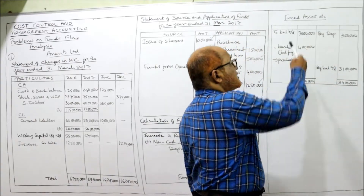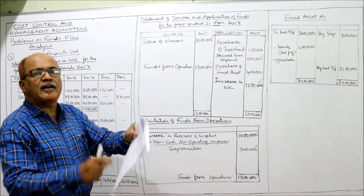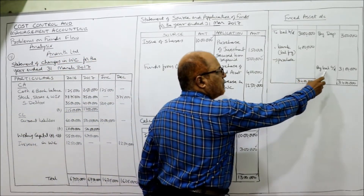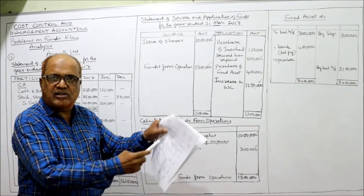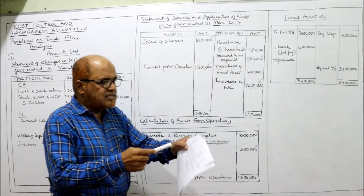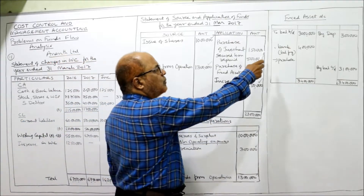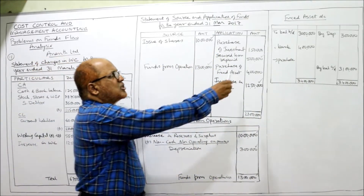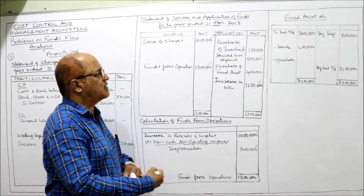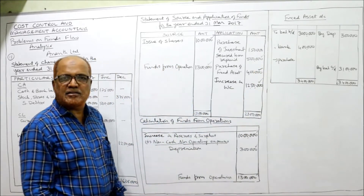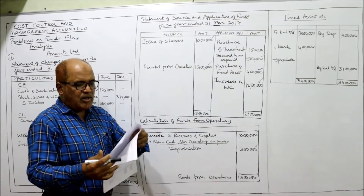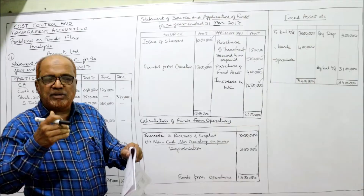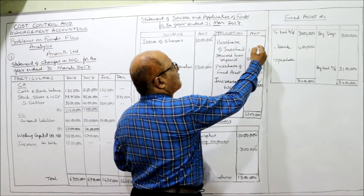We open the fixed asset account. Last year fixed assets were 30 lakh, current year 31 lakh — so balance brought down is 30 lakh. Depreciation provided during the year is 3 lakh, so by depreciation 3 lakh on the credit side. Fixed assets purchased: 4 lakh added to bank — don't write a balancing figure because it is already given in the problem. This purchase of fixed asset of 4 lakh is taken on the application side. Lastly, investments: last year 1 lakh, current year 1 lakh 15,000 — so purchase of investments 1,15,000 is taken on the application side.